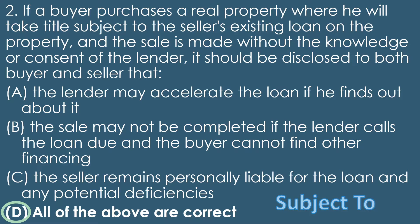So the best answer is D — all of the above are correct. When looking at this question, you might think 'subject to the seller's existing loan' refers to a regular loan assumption, but 'subject to' is a specific term you need to know for the state exam. These were more prevalent with FHA loans until about 1987, when the due-on-sale clause became standard. All of the above are correct when it comes to a subject-to loan.